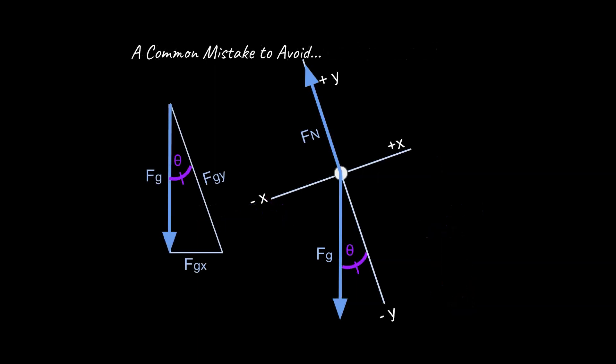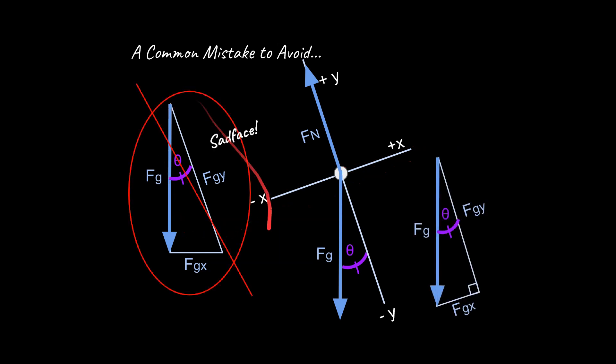One last thing before we end this quick screencast. I do want to point out this is a common mistake I see when students are first learning how to do this. Why is this wrong? Hopefully you can spot the error here. This is wrong because this student is just thinking that the fgx is going to be completely horizontal. And that's not the case because remember our x-axis is now slanted to match the motion that is going to be happening along this ramp.